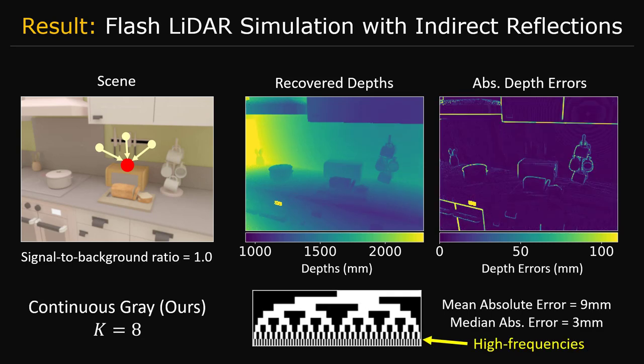If we design the coding matrix to include high frequencies, then the errors due to indirect reflections can be greatly reduced, as shown in this slide. Please refer to the paper for more details.